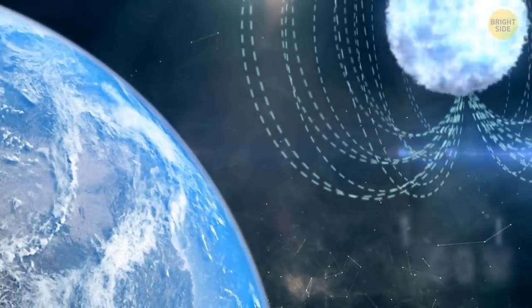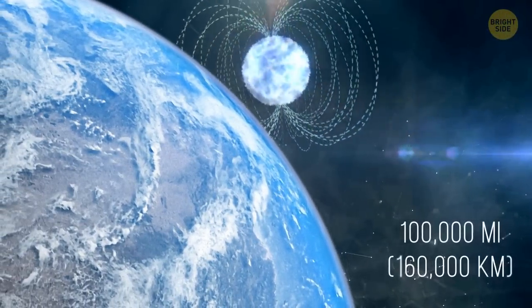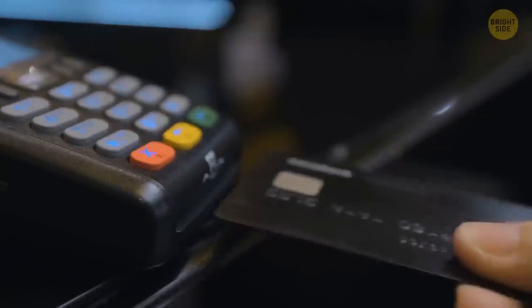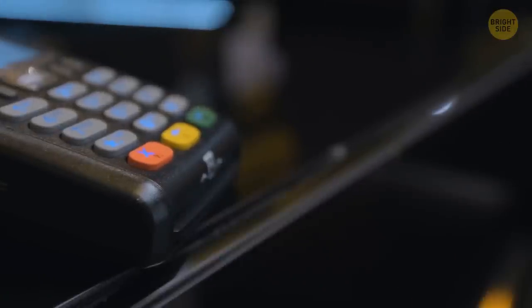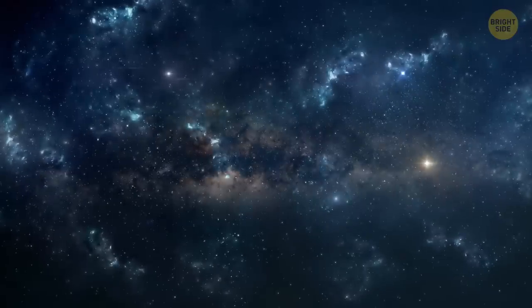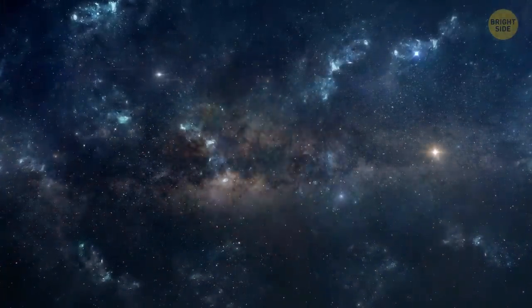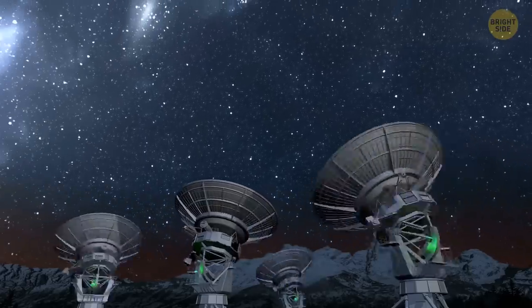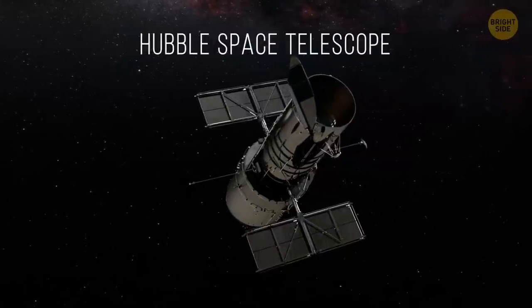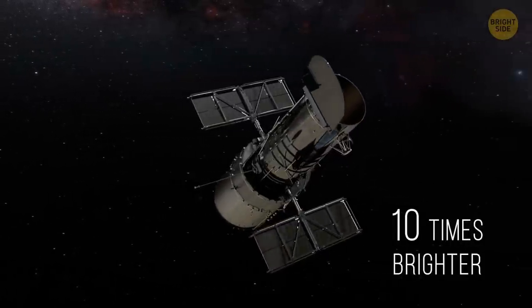If a magnetar flew within 100,000 miles from our planet, it'd wipe out the data on every single credit card in the world. Astronomers have seen magnetars before, but they've never witnessed one getting born. After the light was first detected, scientists understood something didn't add up. They compared different kinds of observations. It turned out that the light spotted by the Hubble Space Telescope was 10 times brighter than predicted.